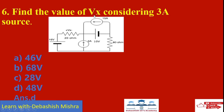Find the value of Vx considering the 3 ampere current source. When you consider the 3 ampere source, the voltage sources will be short circuit and the other current sources will be open circuit. Now 20 ohm and 80 ohm are in parallel. Apply current division rule: 3 ampere into 80, divided by 80 plus 20, equals 240 divided by 100 — that gives 2.4 ampere through 20 ohm, so Vx is 2.4 times 20 equals 48 volts. Answer is (d): 48 volts.